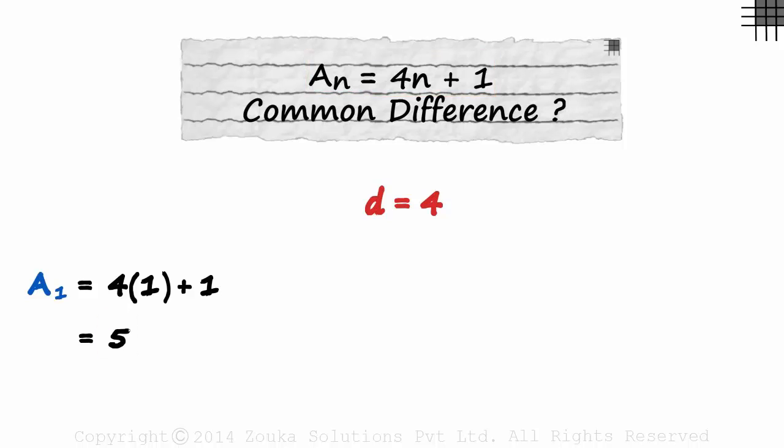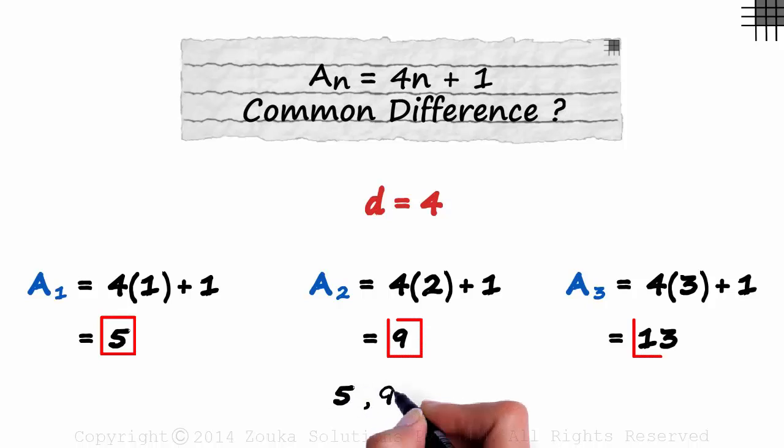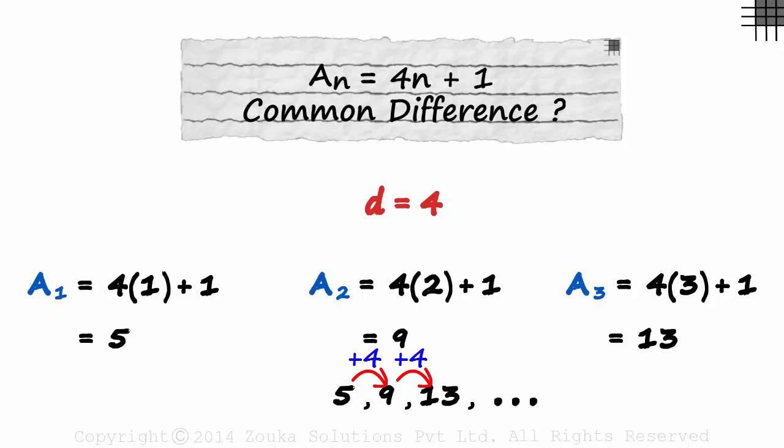Similarly, the second term will be 9 and the third term will be 13. The sequence will be 5, 9, 13 and so on. And you can see that the common difference is 4.